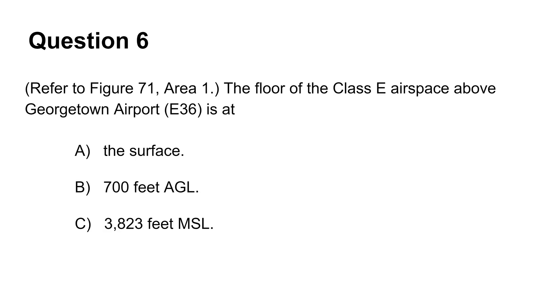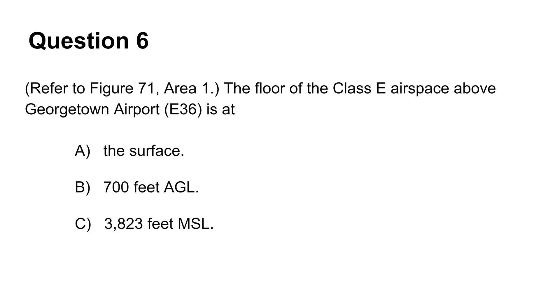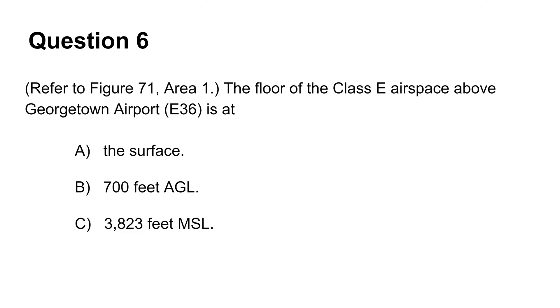The sixth question asks you to identify the floor of the Class E airspace above Georgetown Airport. On the map, there is no identifiable airspace surrounding this airport, so you will be dealing with Class G uncontrolled airspace from the ground up to but not including 1200 feet AGL, while Class E starts at 1200 AGL. The answer choices don't show 1200 AGL directly, but the airport is at 2623 feet MSL per its airport data. Adding 1200 to 2623 gives 3823 feet MSL for the Class E airspace — answer C.